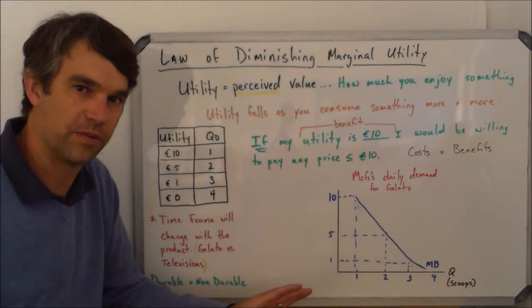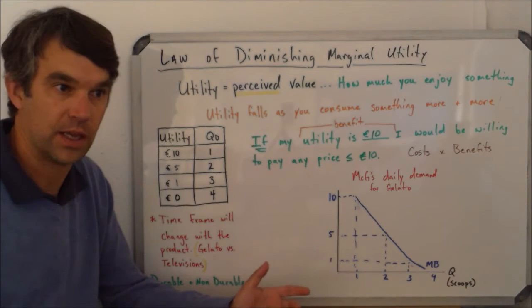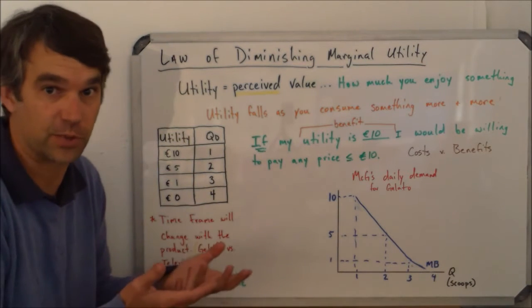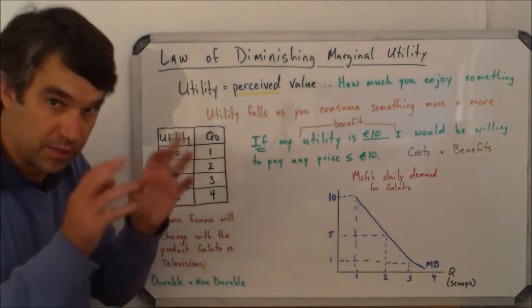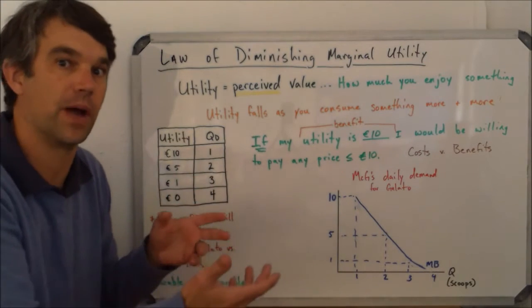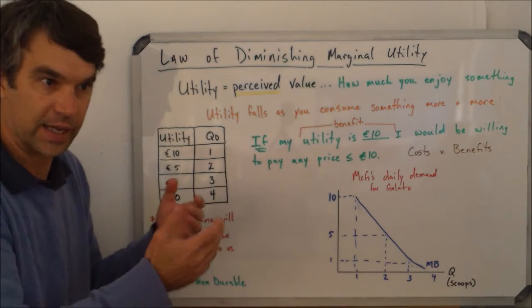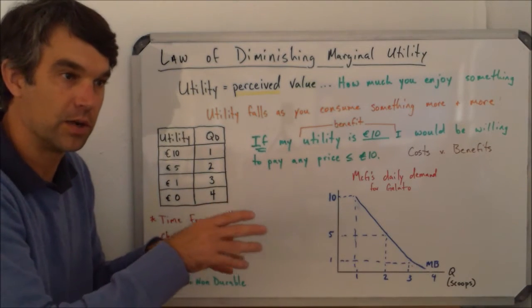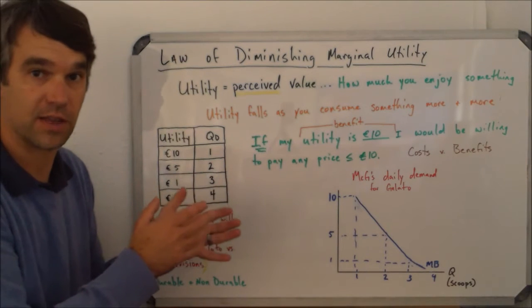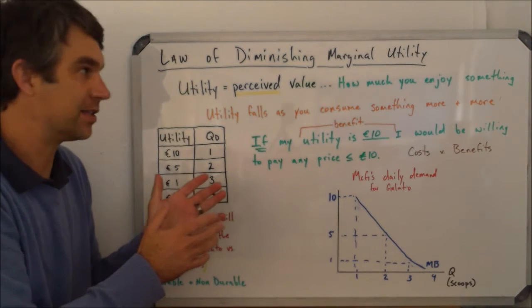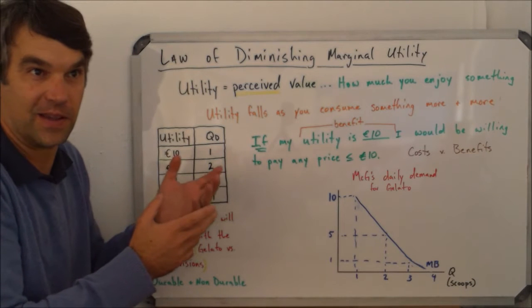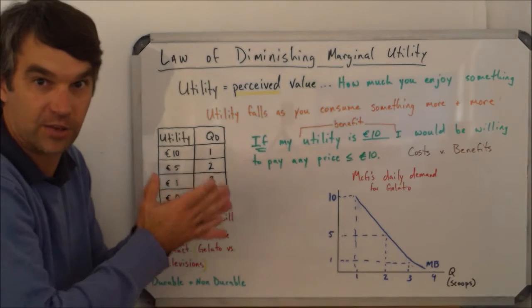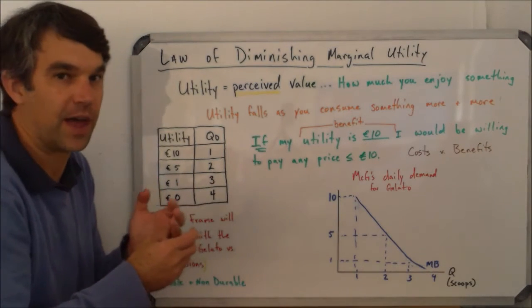When we talked about the income effect and the substitution effect, it was very much about what consumers were now able to do. Because the price went down, their income seemed like it went up, so they were able to buy more things. This kind of presents the same idea or gets to the same conclusion, but now it's because the consumer's desire is changing, it's decreasing as we go. So let me explain what that means.